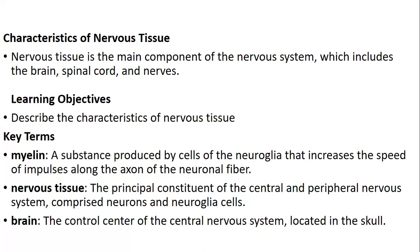The learning objective here is to describe the characteristics of the nervous system. Key terms include myelin, which is a substance produced by cells of the neuroglia that increases the speed of impulses along the axon and neuronal fiber. Nervous tissue refers to the principal constituent of the central and peripheral nervous system, comprised of neurons and neuroglia cells. The brain is the control center of the central nervous system, located in the skull.